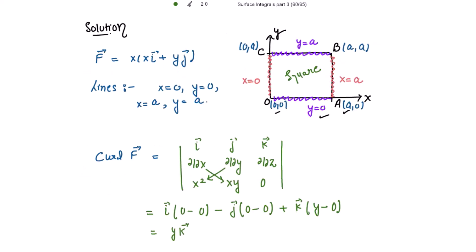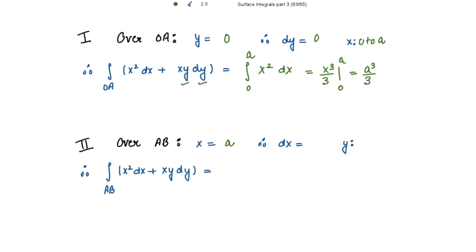Along AB: x equals a, so dx = 0 and y varies from 0 to a. Skipping the first term since dx = 0, the integral becomes ∫a·y dy from 0 to a = a·(y²/2) from 0 to a = a³/2 minus 0 = a³/2.